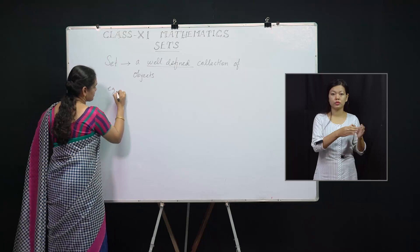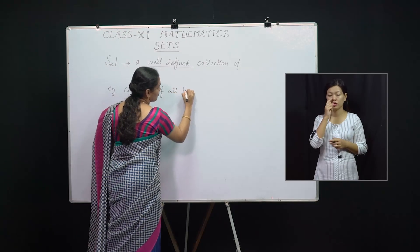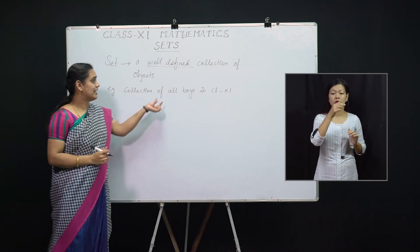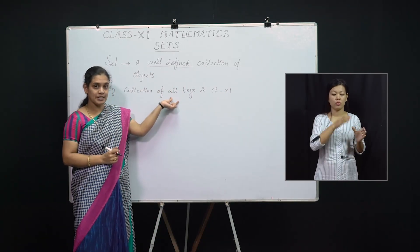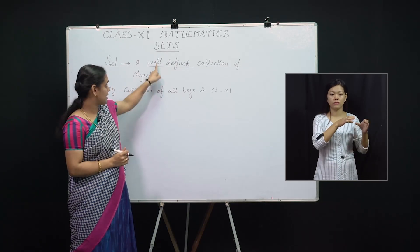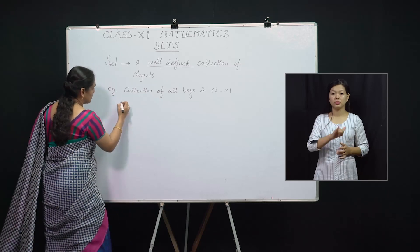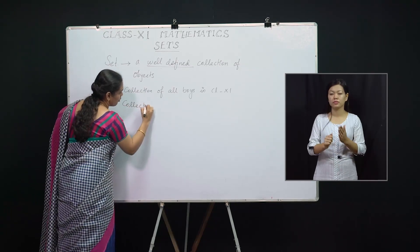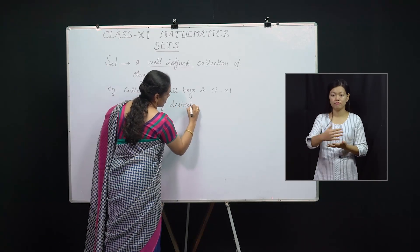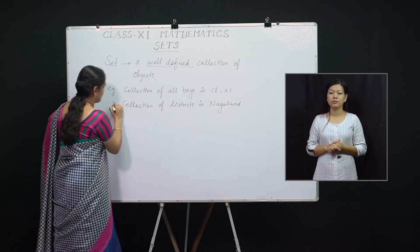For example, collection of all boys in Class 11 — here we cannot include a girl, isn't it. So only we can collect the relevant objects; that is well-defined. It says whether the given object belongs to this collection or not. Some more examples: vowels in English alphabet, collection of districts in Nagaland — these are sets.